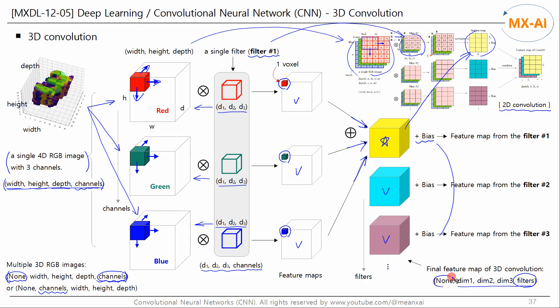If we add the batch dimension here, it becomes five-dimensional. Therefore, the feature maps of multiple 3D RGB images have a five-dimensional structure.